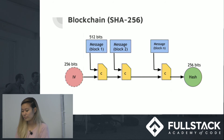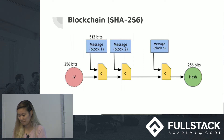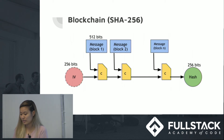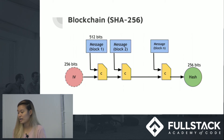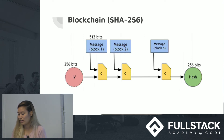Now I'll talk about the hash function Bitcoin uses — SHA256. It takes the message or data you're trying to hash and breaks it up into 512-bit chunks. If your message doesn't reach 512 bits, it adds padding until it does. It takes an IV value, adds it to your message plus your nonce, and that goes through a compression function C, creating a hash value of 256 bits. It keeps doing that until it reaches the end of your blockchain, and the resulting hash contains your entire blockchain history.